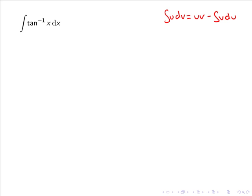We will use the trick of representing the integral of tan inverse x dx as the integral of 1 times tan inverse x dx. We choose u as the function we don't know how to integrate, so we let u equal tan inverse x, which means that dv equals 1 dx.